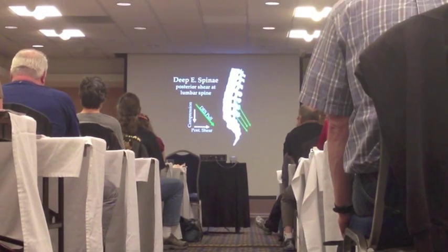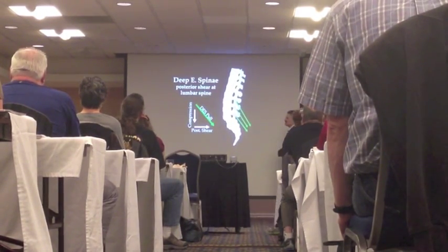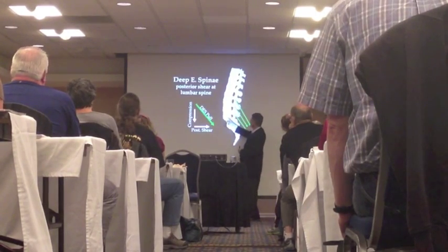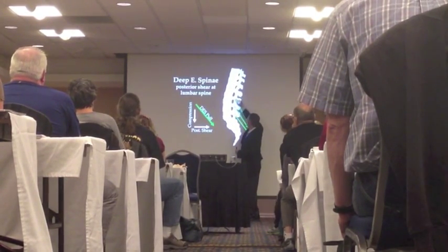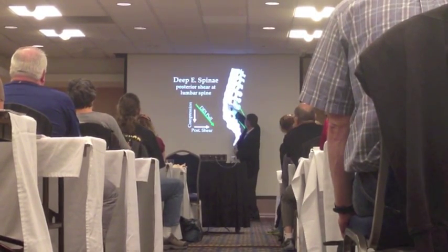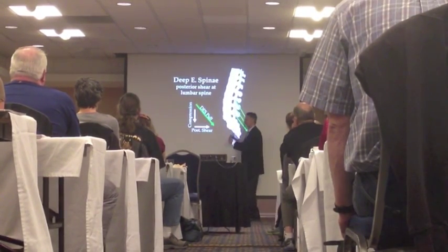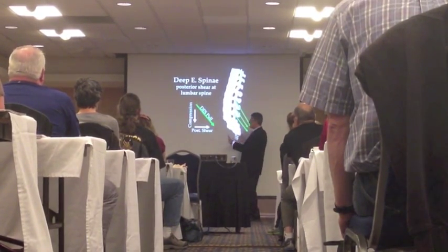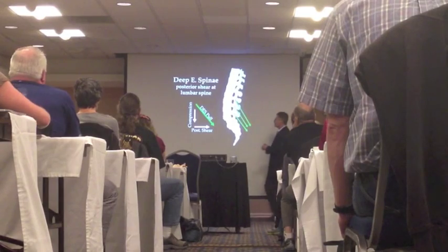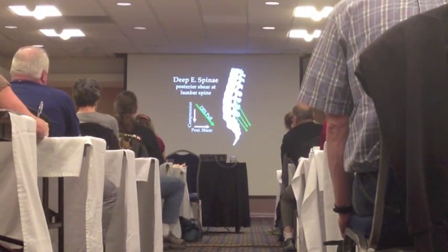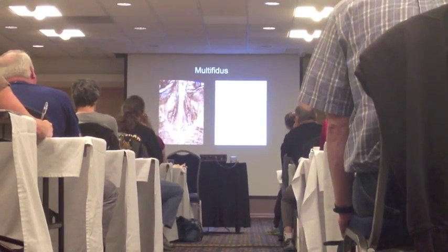The deep erector spinae is not a big extensor of the spine. It attaches to the transverse process, which is pretty close to where the axis of rotation is, so it doesn't have a good lever arm for extension. That's why, when you look at it, it's more about compression and shear — more of that stabilization of the spine.